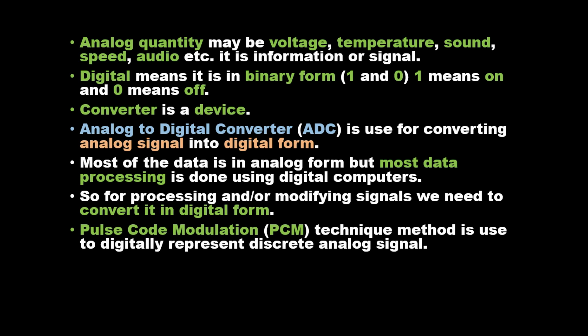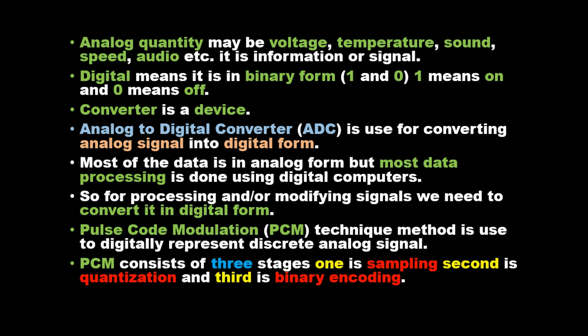Pulse code modulation, PCM, technique is used to digitally represent discrete analog signal. PCM consists of three stages: one is sampling, second is quantization, and third is binary encoding.